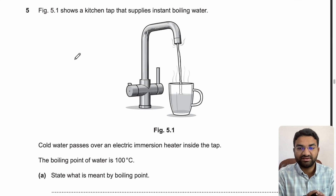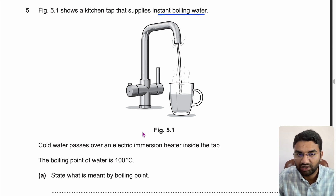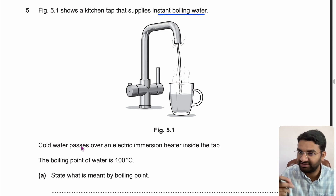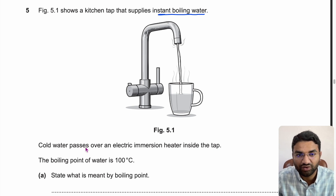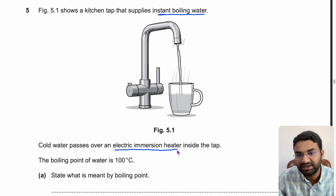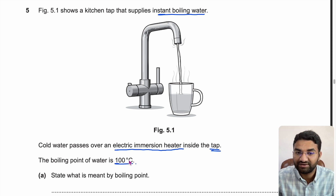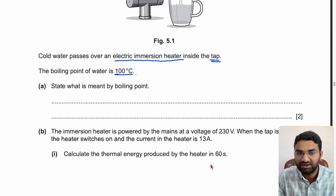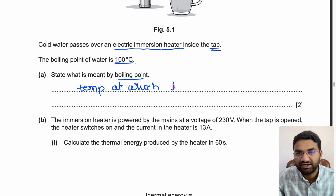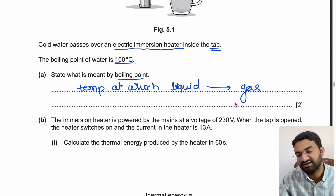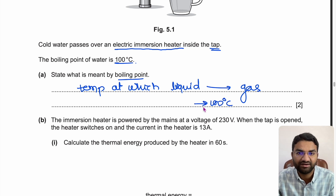Now a thermal physics question — Figure 5.1 shows a kitchen tap that supplies instant boiling water. Cold water passes over an electric immersion heater inside the tap. The boiling point of water is 100°C. The question asks: state what is meant by boiling point. Answer: the temperature at which a liquid is converted into gas — for water, this is 100°C.